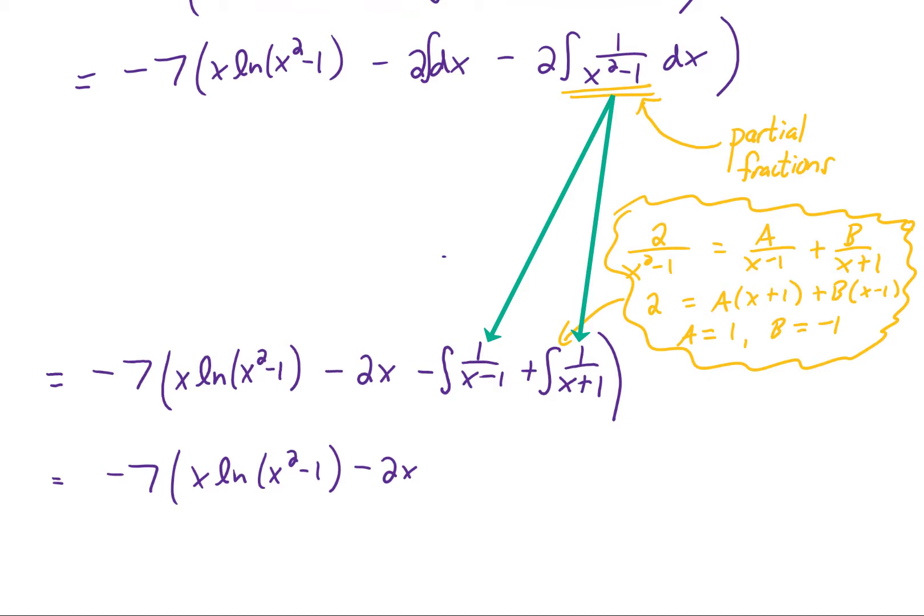What that does is it splits up our integral that we don't know how to do into two smaller integrals that we do know how to do. Ultimately, we get the natural log of x minus 1 for one term, and the natural log of x plus 1 for the other term. I'm going to tack a C on there.